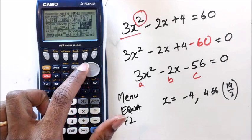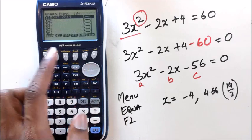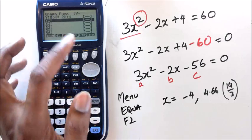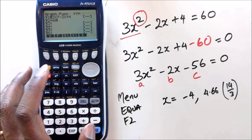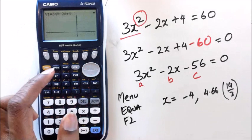you want to press menu, go into graph, and put in your equation. So y1 equals 3x squared minus 2x plus 4. And the second one, put down y equals to 60. So at this point, you've got your two equations. And when you press draw,